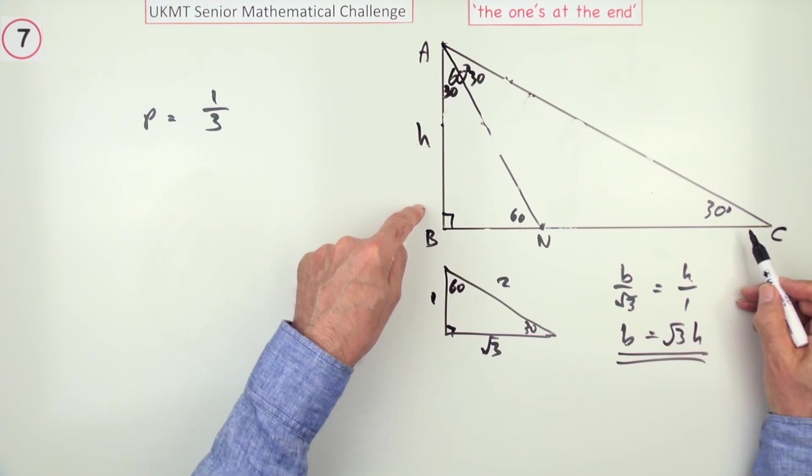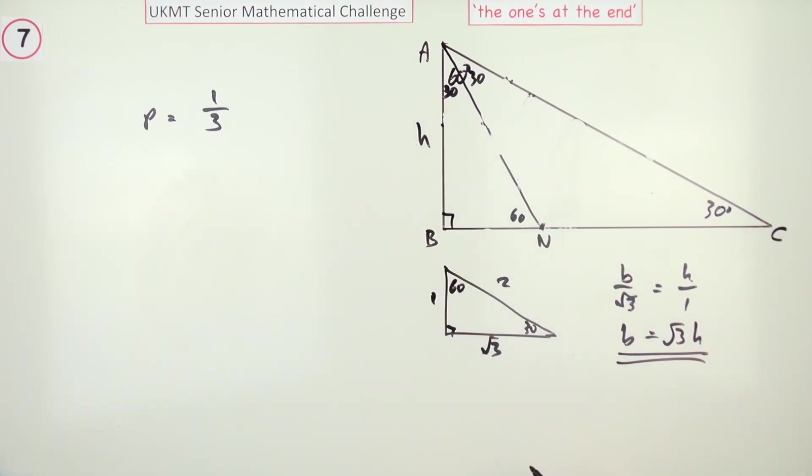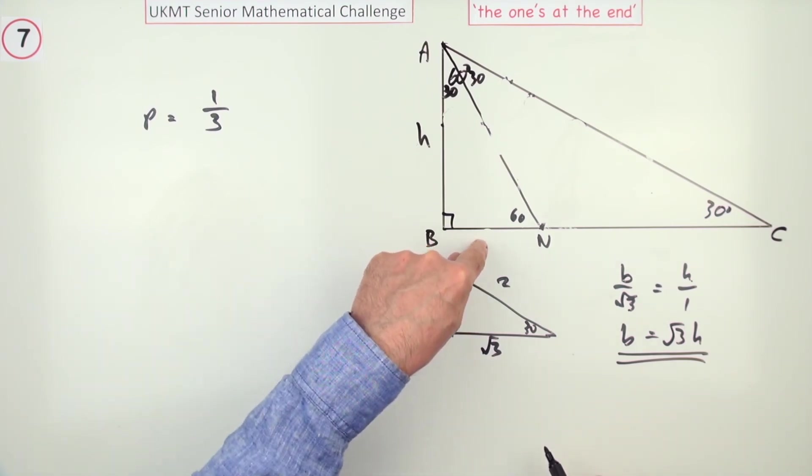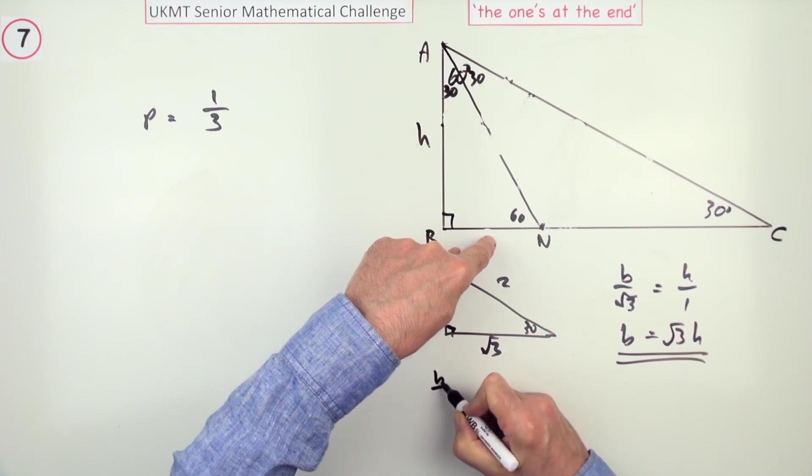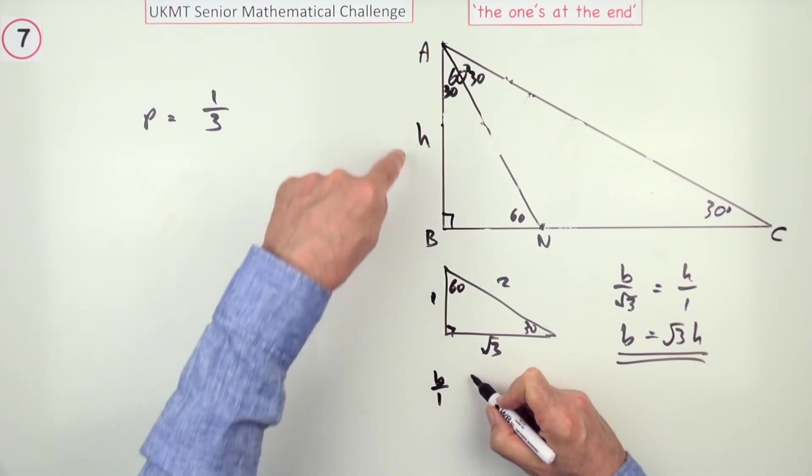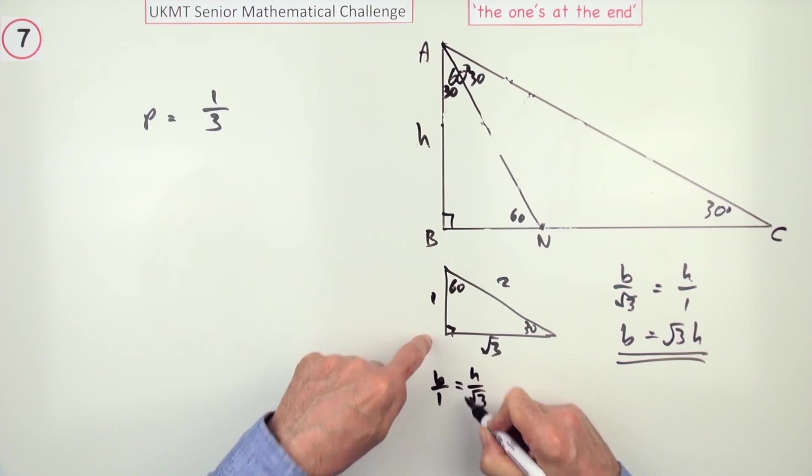So, the area of that triangle would be a half base times height. What's the base of this triangle? Well, it's the other way around. In this one, its base corresponds to the 1, so B over 1 is the H over the root 3. So, for this triangle, its base is the height divided by root 3.